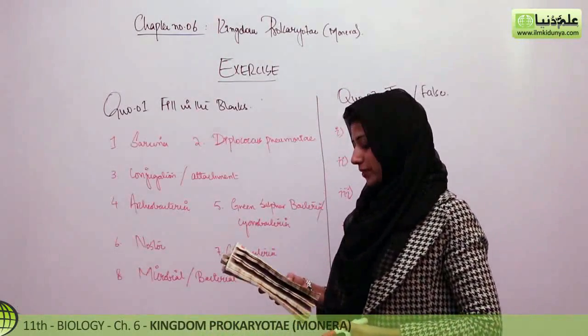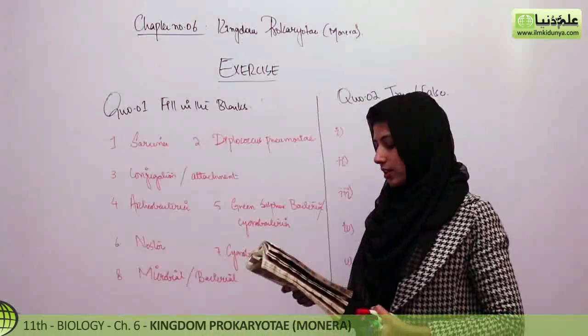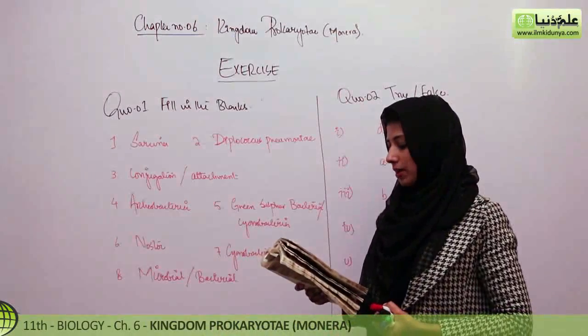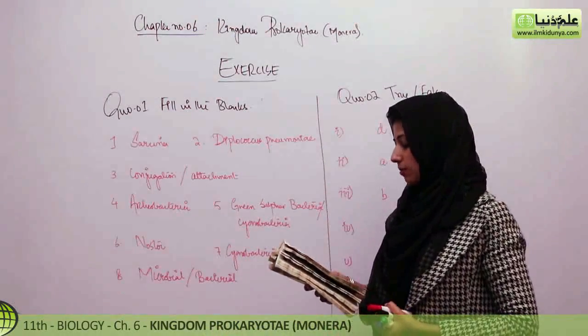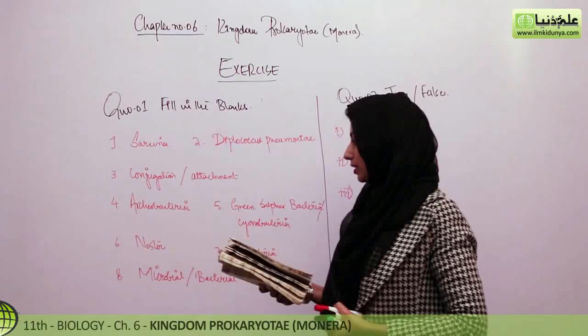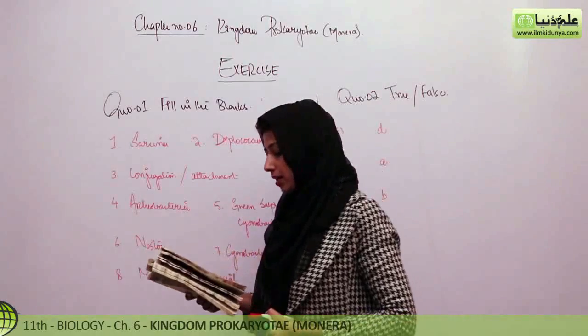After that, the next blank is: dash — an unusual type of bacteria that live in extreme habitats. The answer is archaeobacteria.